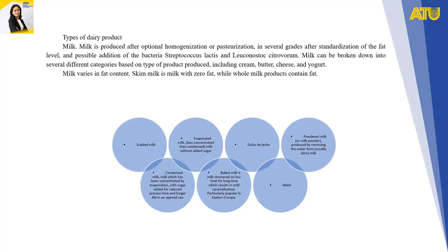Scaled milk includes condensed milk, which has been concentrated by evaporation with sugar added for reduced process time and longer shelf life in an open can. Evaporated milk is less concentrated than condensed milk without added sugar. Baked milk is milk simmered on low heat for a long time, resulting in mild caramelization, particularly popular in Eastern Europe. Dulce de leche, malai, powdered milk produced by removing water from milk, and khoya — milk completely concentrated by evaporation, used in Indian cuisine.